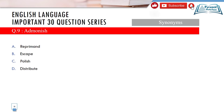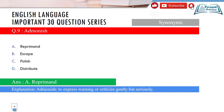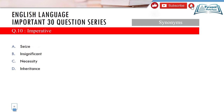Question 9 is synonyms. The word is 'admonish.' Options: A) reprimand, B) escape, C) polish, D) distribute. Admonish means to criticize or warn someone in a firm but gentle way. The correct synonym is option A — reprimand. Escape, polish, and distribute do not match.